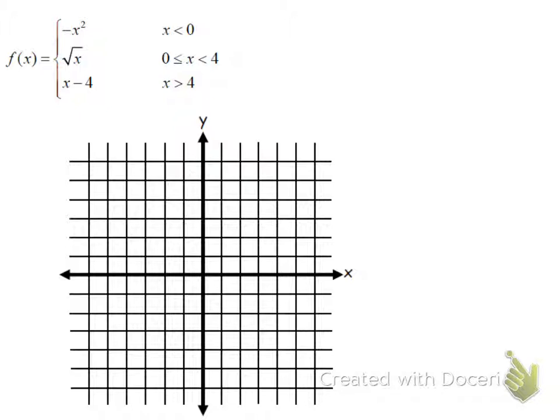But let's say that you already know how the graph is supposed to look like because you know your parent functions, you know about transformations. You really don't have to come up with a table of values.